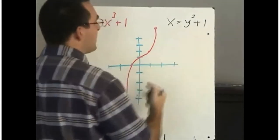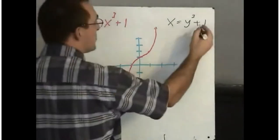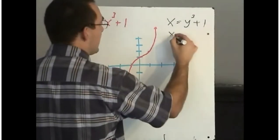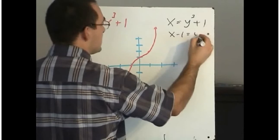And again we have this problem because we do not have y equals. So we're going to do a little bit of algebra here. We'll minus 1 from both sides to try to isolate y.